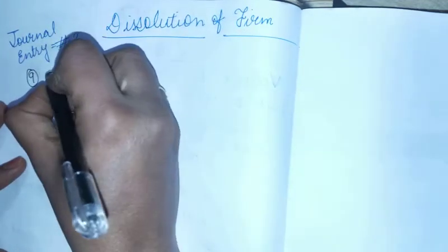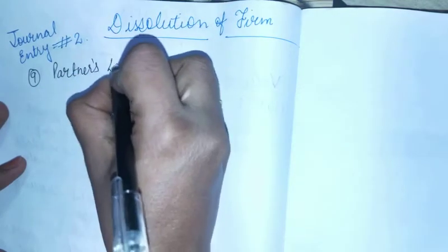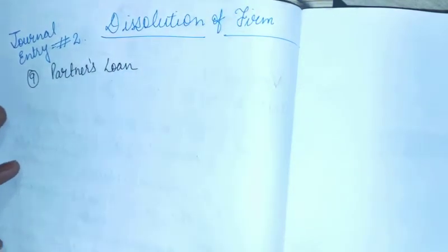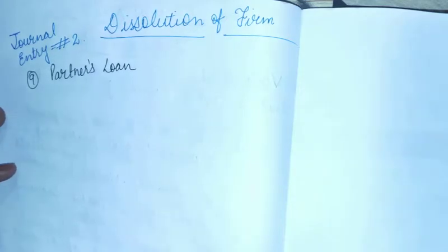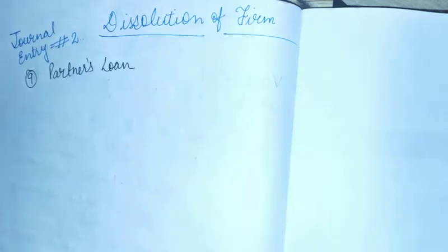First, we will look at the journal entry passed for partners' loan account — that is point nine. In the last video we covered five to six cases regarding realization expenses. In this topic there are also some cases. The first case is: when a partner has a credit balance in the capital account.